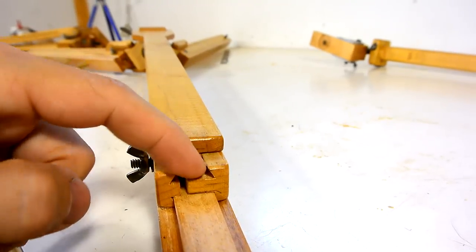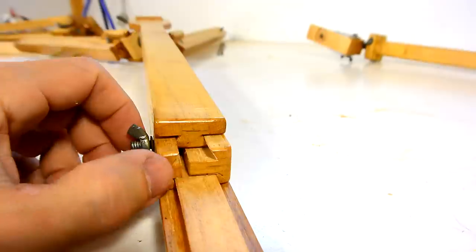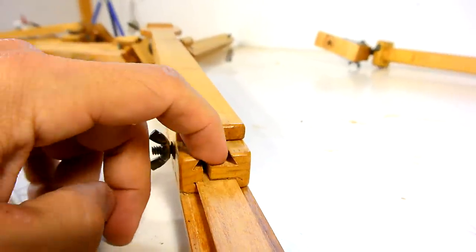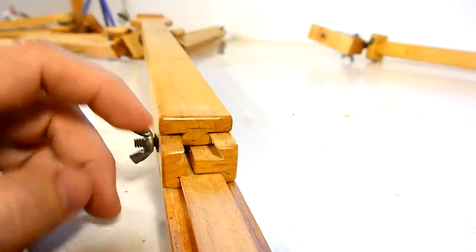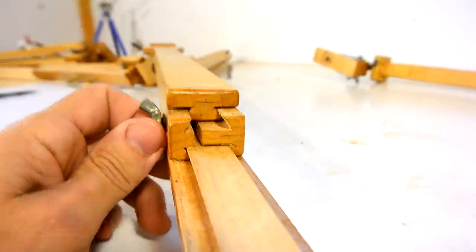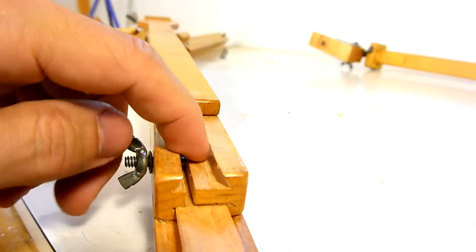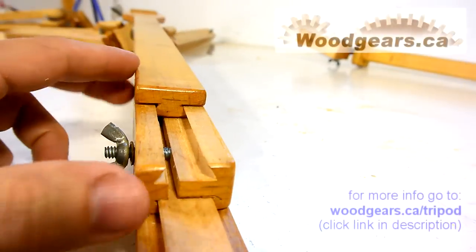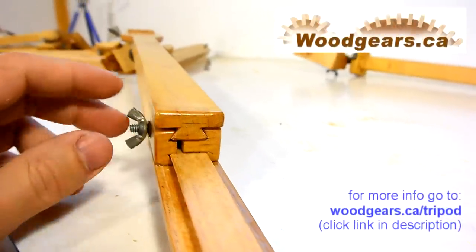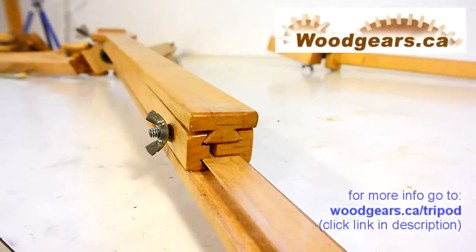The sliding dovetail joints for the legs are 30 degree dovetails. And dovetail bits for joinery tend to be more around 14 or 15 degrees. So I actually cut these not with a dovetail bit, but with a tilting shaper head that had a 30 degree cutter. But you can also make these on a table saw. And I think I'll make a short video just showing how to do that.